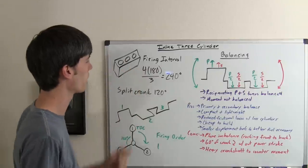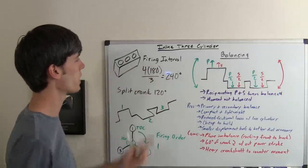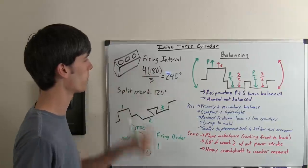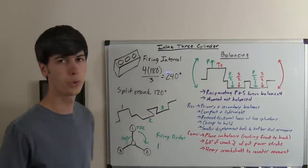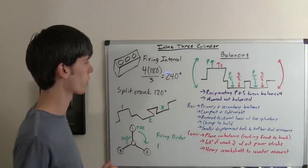So let's talk about how it works and some of the advantages and disadvantages of this engine. So here we have our three-cylinder inline block. In order to calculate the firing interval, we take the number of strokes, multiply by 180 degrees, divide that by the number of cylinders, that gives us a firing interval of every 240 degrees rotation of the crankshaft.